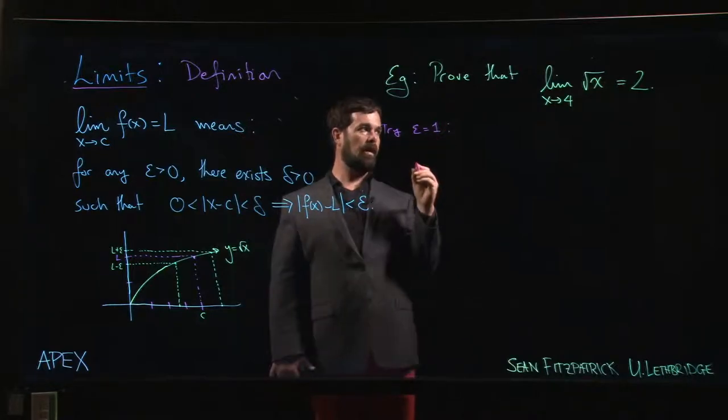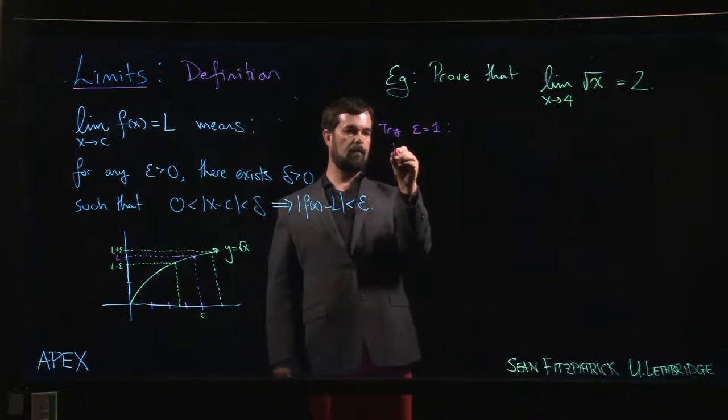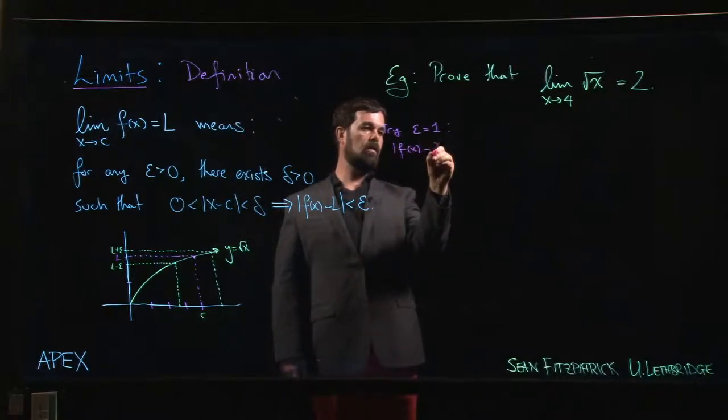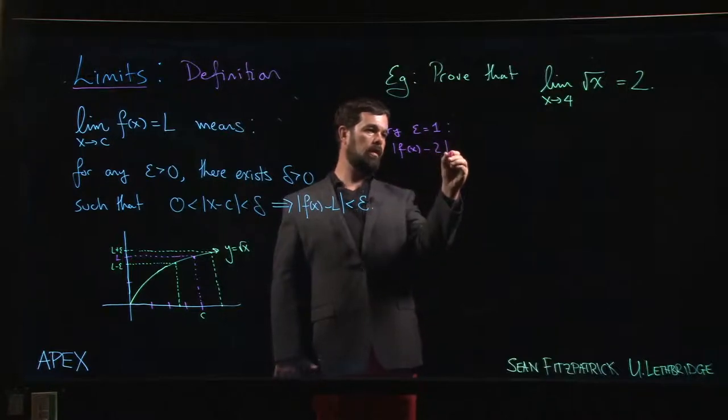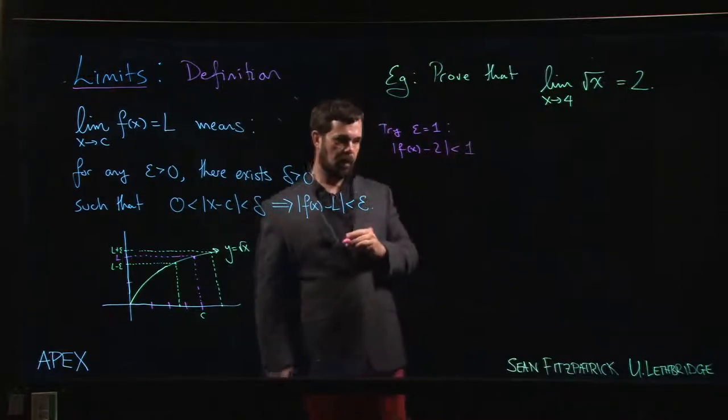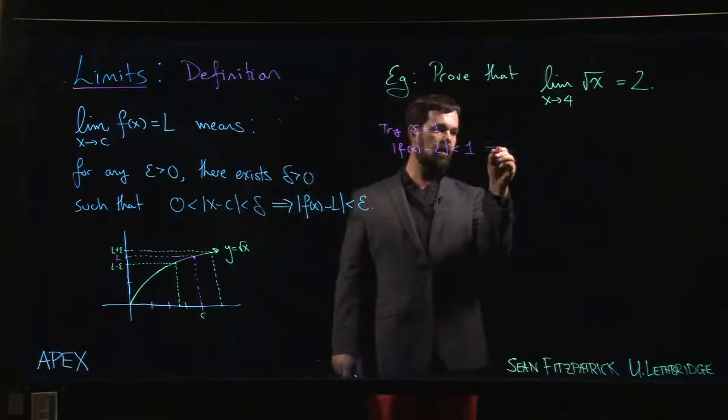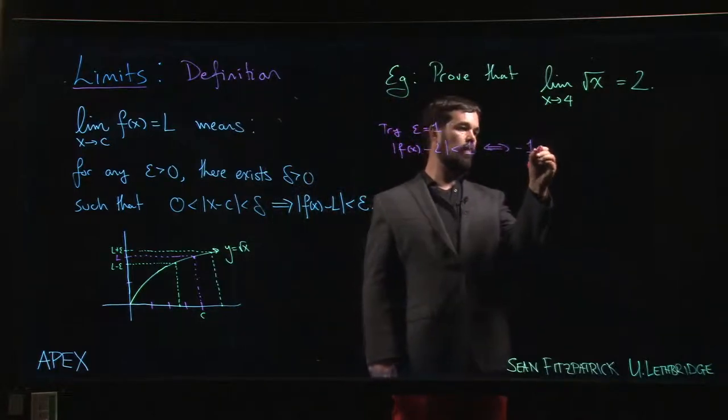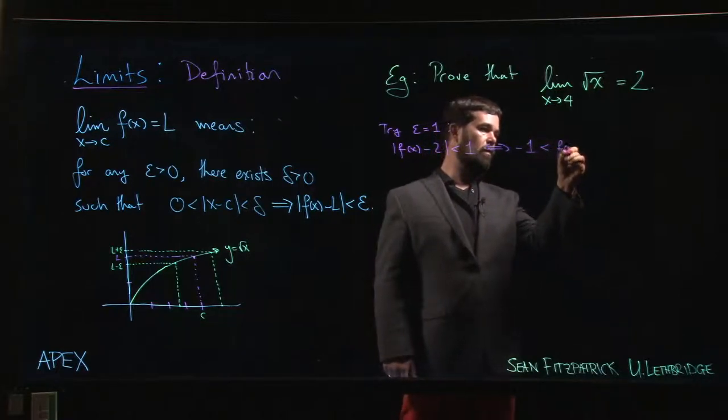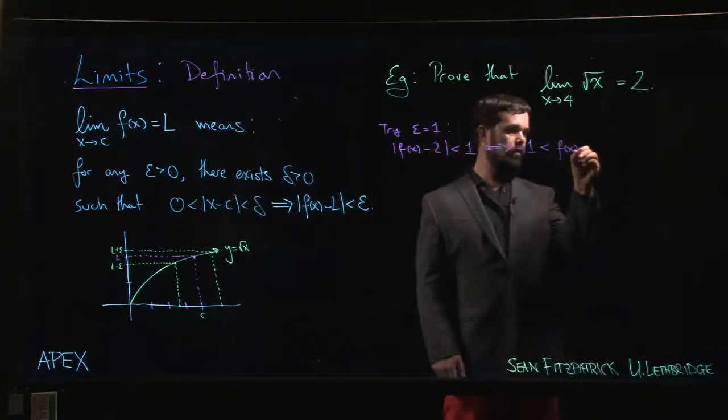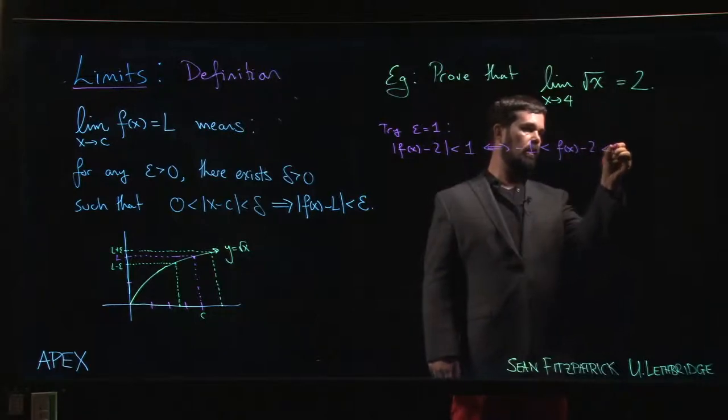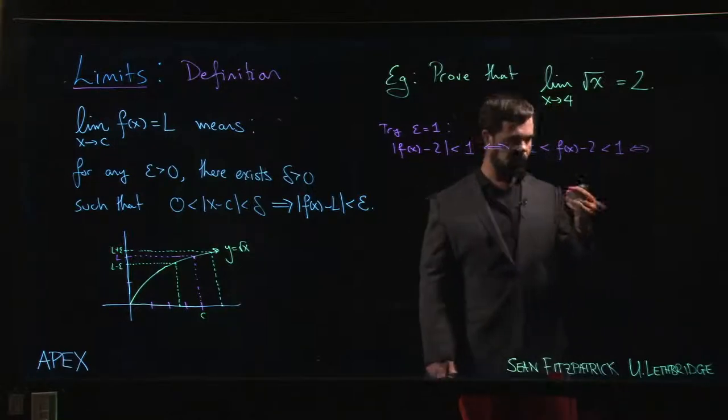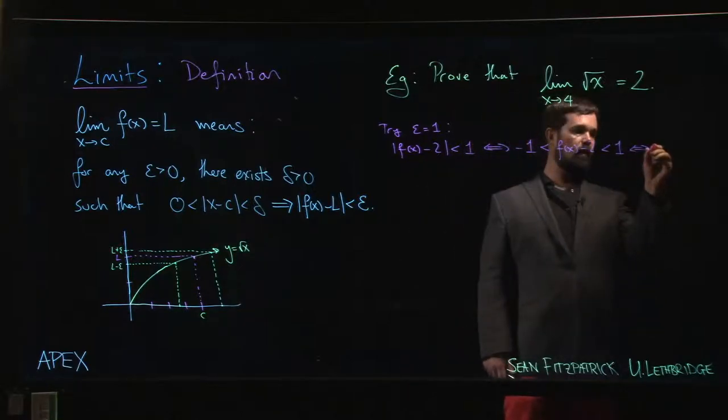So I need this distance f(x) minus 2 to be less than one. Well, we know that that inequality is equivalent to saying minus one is less than f(x) minus two, less than one. And if we add two all the way across, this is equivalent to saying that f(x) has to be between one and three.